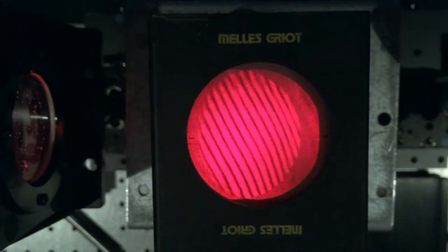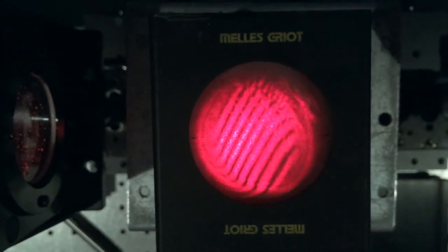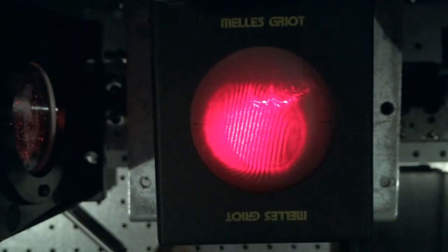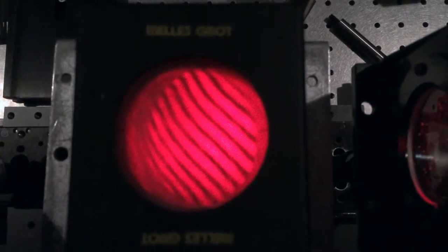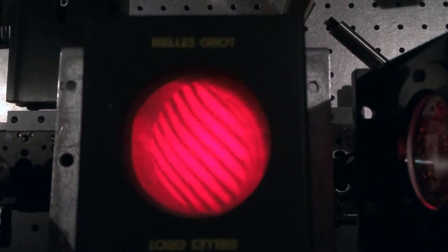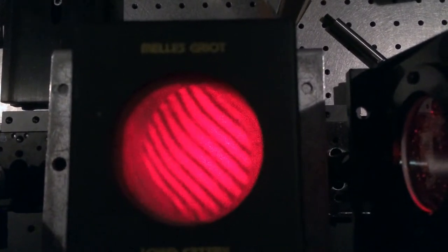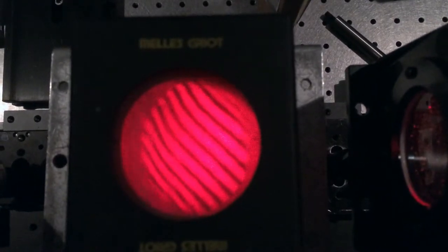Here you can see the effect of defocus on the wedge shear plate going from outside to inside focus, and you can see that the fringes rotate. Next we see the effects of tip and tilt on the wedge shear plate. The tip adjusts the position of the fringes and the tilt does nothing.